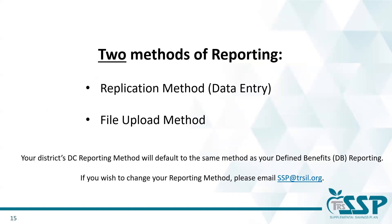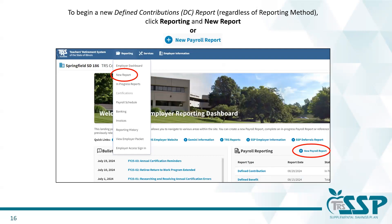Now it's time to process the defined contribution report. When reporting your district's TRS SSP defined contribution report, you have two reporting methods to choose from. The first is the replication method, also called the data entry method. The other option is the file upload method. Your district's DC reporting method will default to the same method as your defined benefit reporting, unless you notify our staff and request to change your method for DC. It's worth noting that you can have different reporting methods for your DB and DC.